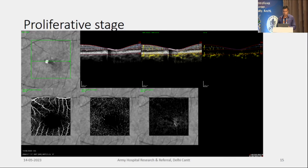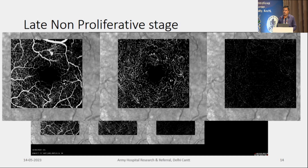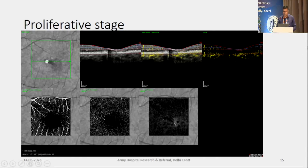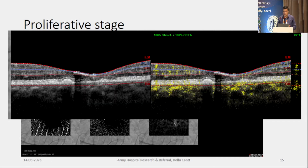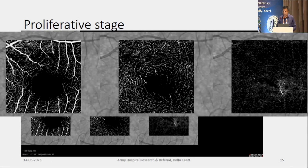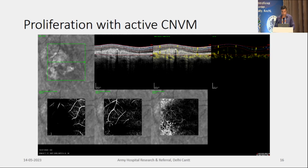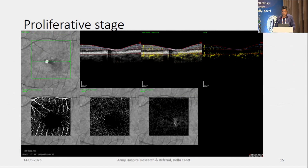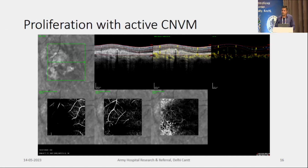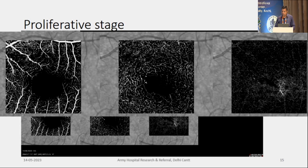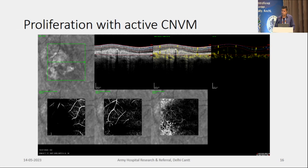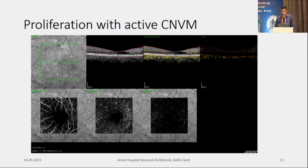In late non-proliferative stages, these changes progress with time. Sometimes even when OCT does not show cavitary changes or RPE defects, you can appreciate vascular dilatation and tortuosities on OCTA. In the proliferative stage, the deep capillary plexus shows classical MacTel changes while the outer retina shows early proliferative changes seen as hyper-reflective shadows. MacTel can also occur along with an associated active CNVM.